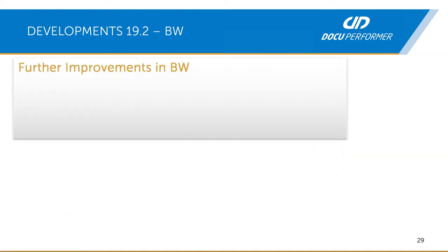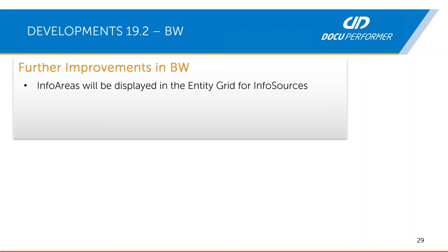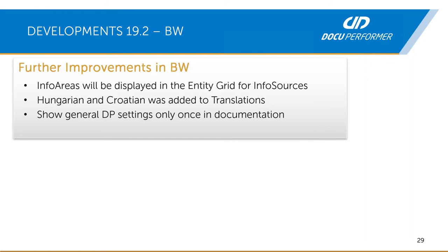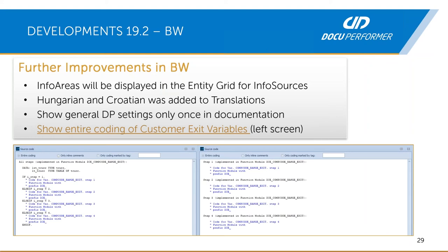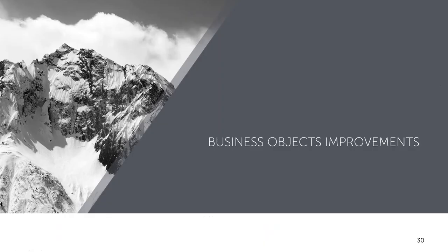There are many other improvements. It's now possible to display the info areas in the entity grid for info sources. Hungarian language was added to translations. It's possible to show the general DocuPerformer settings only once in the documentation. Another improvement is that you can now show the entire coding of a customer exit variable. In previous versions it was only possible to display the code step by step, without the declaration of variables. With the new version it's possible to display the entire coding — not only the coding between steps. To enable this, you must tick a checkbox in the settings. More details are available in the user manual.